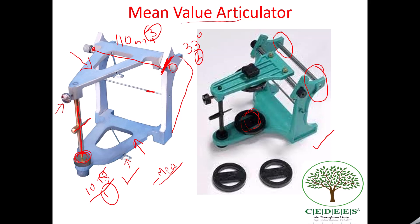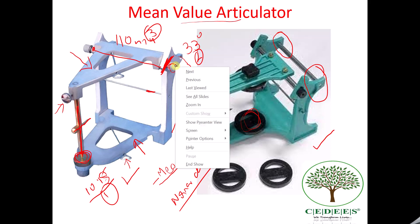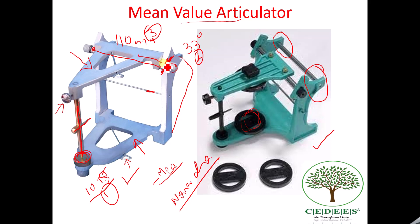Now, coming to the name non-arcon type articulator — why is it called so? If you look carefully, the condylar pin is basically attached to the upper member, whereas in a human jaw the condyle is generally attached to the lower jaw. This arrangement of the condyle is totally opposite to that of a normal human jaw, which is why it is called a non-arcon type articulator.